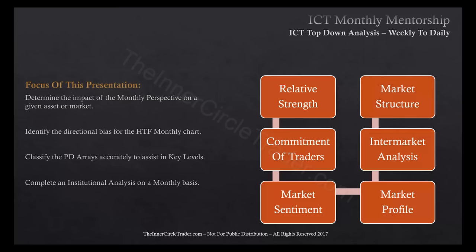After that, I start looking at market structure and begin blending in institutional order flow. I want to look for down-close candles supporting price and up-close candles being broken in bullish market structure. In bearish market structure, I want to see up-close candles resisting price and down-close candles breaking. Everything mentioned about the monthly applies here, but now we start looking heavily for institutional sponsorship by studying the order flow.